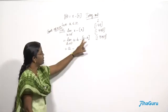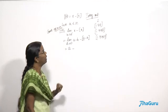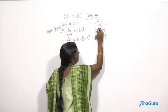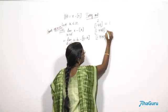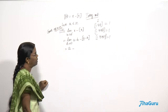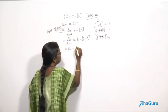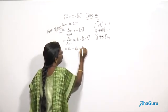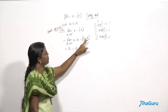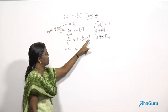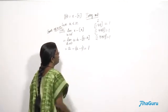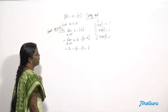When we consider the greatest integer less than or equal to this value — for example 1.998 — it is going to be equal to 1. So the greatest integer function of (a minus h) equals a minus 1. Therefore, the left-hand limit simplifies to a minus (a minus 1), which equals 1.